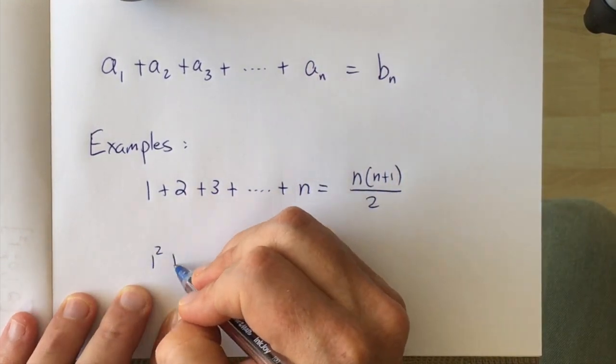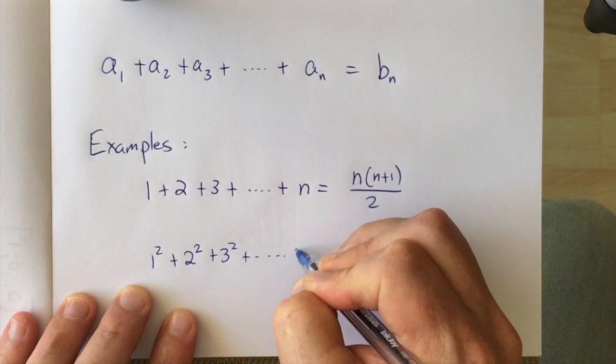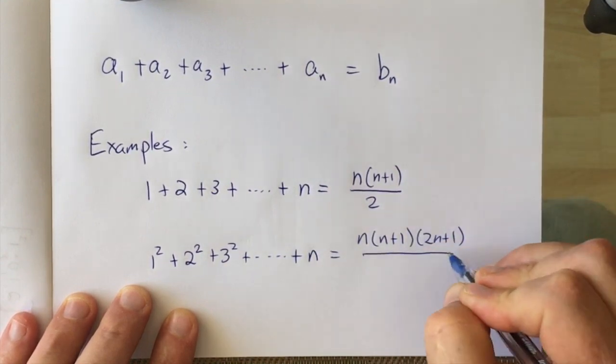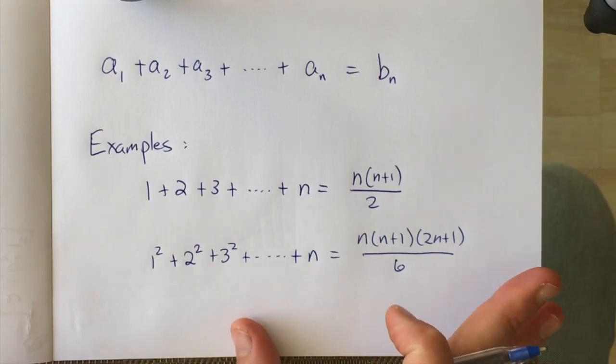So two examples of this are the sum of the first n integers and the sum of the first n integers squared, although I'm missing a little square on that n there, it should be n squared.